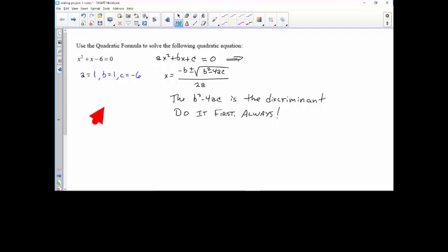So b² - 4ac is 1² - 4(1)(-6) = 1 + 24. Oh come on man, you give me one that's gonna factor.